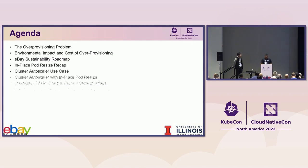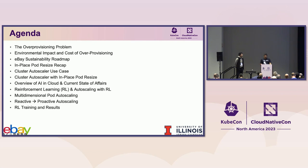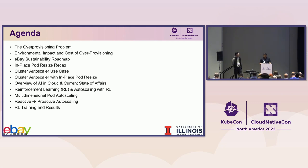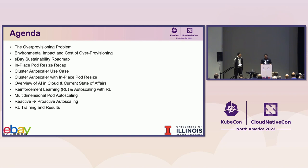The agenda for today: we'll start by describing the overprovisioning problem and look at the environmental impact and the dollar cost. We'll touch upon our roadmap and recap the in-place pod resize feature, look at the cluster autoscaler use case, and see how in-place pod resize can help improve it. Then Haoran will walk us through the current state of AI in the cloud, the role reinforcement learning plays in autoscaling, how AI helps us go from reactive to proactive, and finally we'll review RL training and evaluation results.